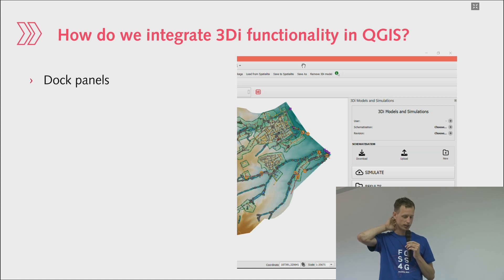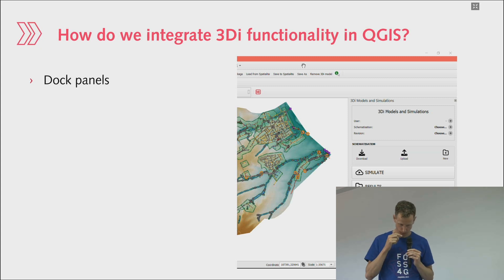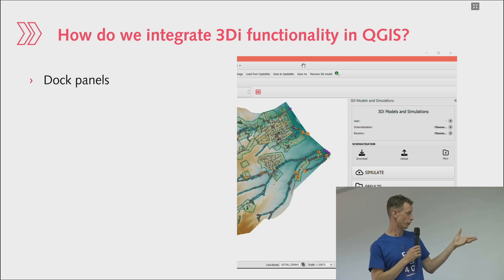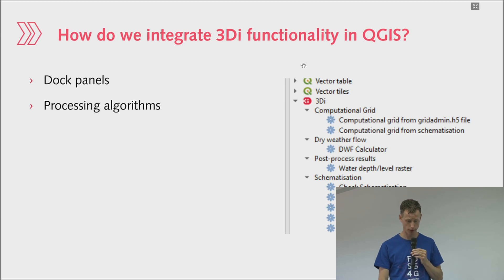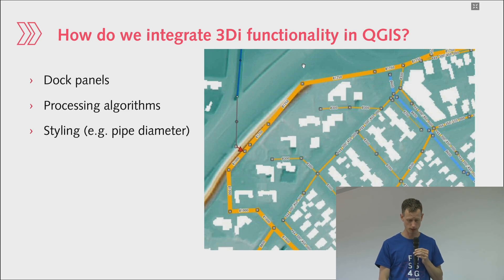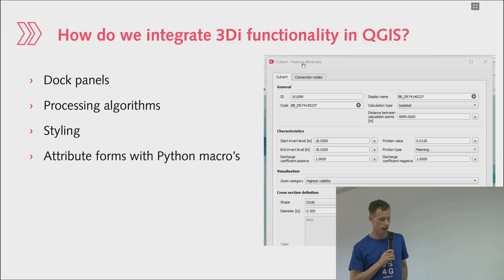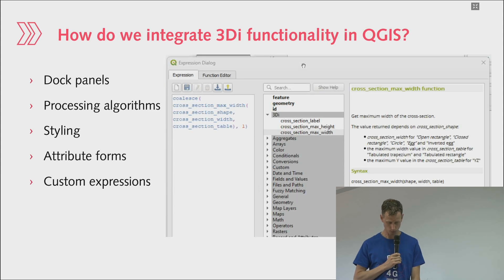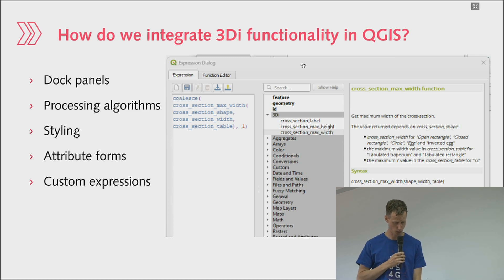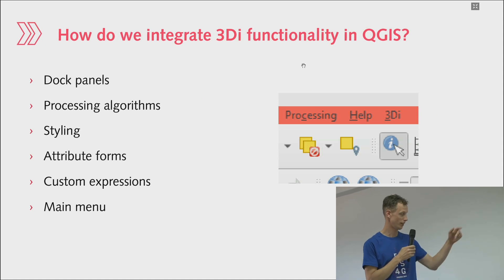QGIS is really incredible in how much every single component can be tweaked and used in plugins or other ways through the QGIS API. Some of the most important things for users are dock panels, but we also offer a range of processing algorithms, extensive styling options — the possibilities in QGIS are almost endless — Python macros in attribute forms to make user input easy, custom expressions, and a simple item in the main menu.